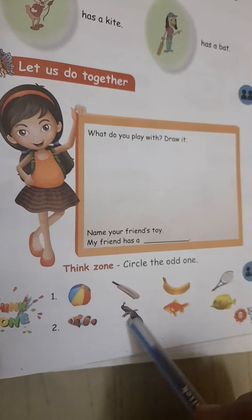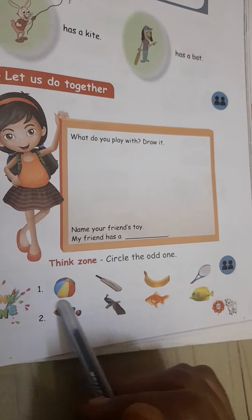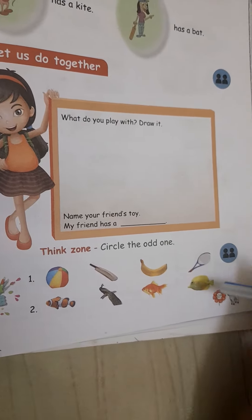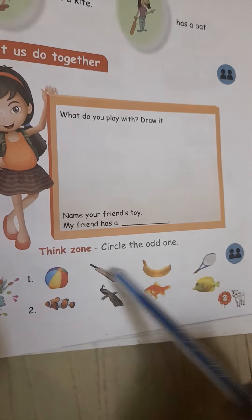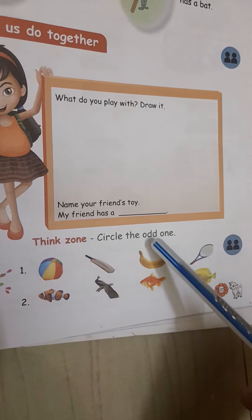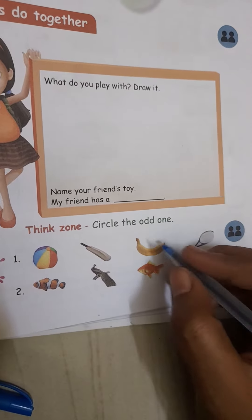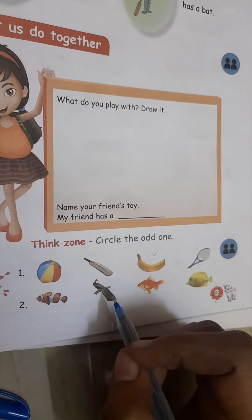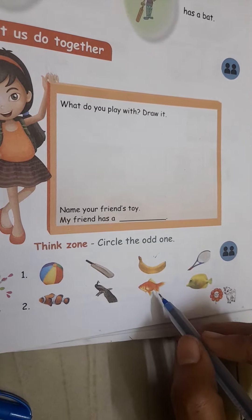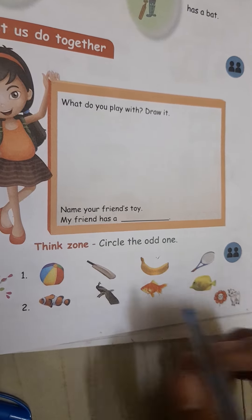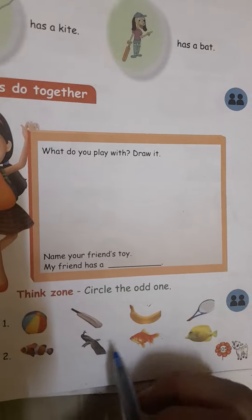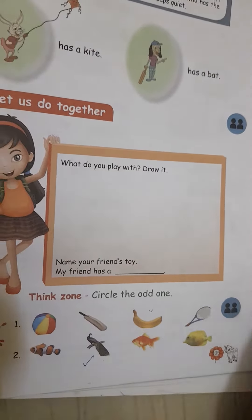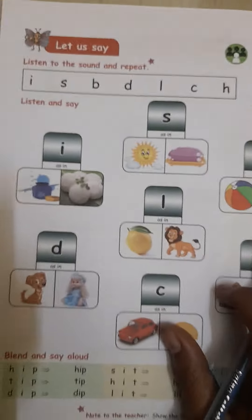The odd one out — first one here: ball, bat, banana. This is also a bat — tennis bat. Which one is the odd one, the different one? The banana! So circle it. And then here — the fish. This is a fish, this is a fish, and this is a pickup — that is the different one. Circle this one.